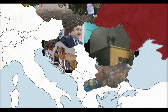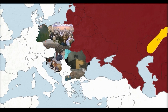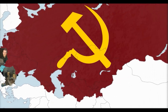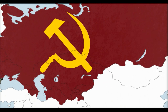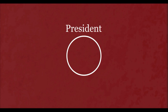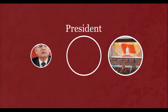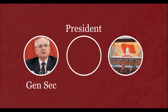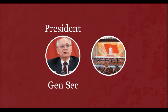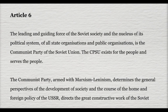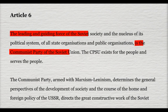As Gorbachev refused to intervene, almost all the socialist regimes in Eastern Europe began to fall, which got the ball rolling for the same thing to happen within the Soviet Union. The new role of the Presidency of the Soviet Union was created in 1990 and was elected by the Congress of People's Deputies. As General Secretary of the Communist Party, Gorbachev was the only candidate to run in the March election because of Article 6 in the Soviet Constitution, stating that the Communist Party was the only legal party in the country.